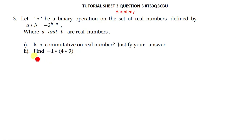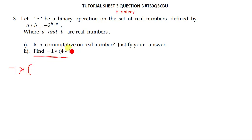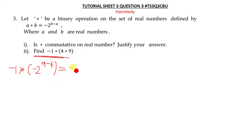Let's move on to the last question: find the solution for the expression (-1) ★ (4 ★ 9). We start with what is in the brackets: 4★9. Where there is a we put 4, where there is b we put 9, so this gives us (-2) raised to the power (9 minus 4).